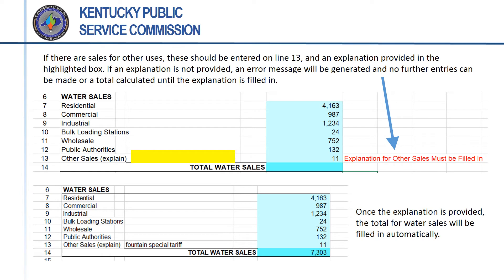The final line in this portion of the form is for entering revenue from all other sales. Any entry on this line has to be accompanied by an explanation in the highlighted box. Without an explanation, the form generates an error message and no total for the category will be calculated — you will be unable to proceed until the explanation is provided. Other sales may include items such as sales under special tariffs for certain uses or recovery of the cost of water lost due to excavation damage. It is expected that this category will be a small portion of total sales.